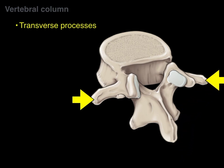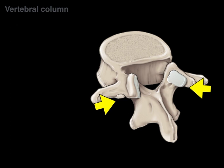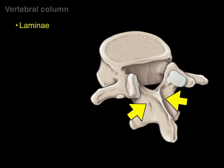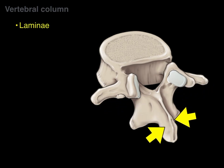Next is the transverse process — a projection from the bone in the transverse plane, side to side, for muscle and ligamentous attachment. Then we have the lamina, the smooth part that connects the spinous process back to the transverse process. The lamina is also the part cut out during a laminectomy to access the vertebral canal.